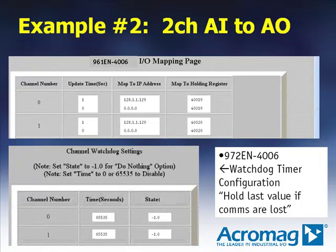The top screen capture shows how to configure channels 0 and 1 on the analog input module. Both channels are set for one-second updates and will be mapped to the same IP address. Two different Modbus registers are shown, which indicate two different output channels on the analog output module. The bottom screen capture shows how to configure the watchdog timer and output state values for the analog output module. The watchdog timer is set to 65535 and the output state is set to minus one, which means they are disabled. So in the event of communications loss to the output module, the analog output channels will hold their last values indefinitely until updated properly by the input module.